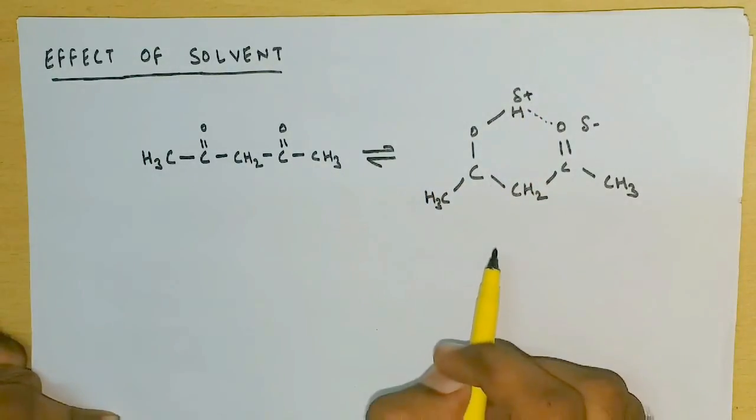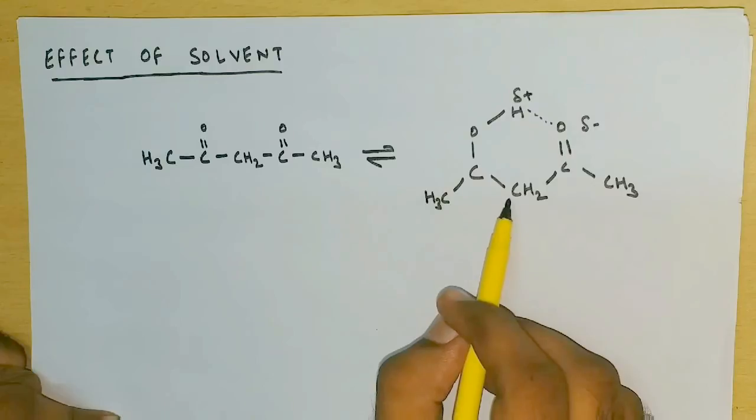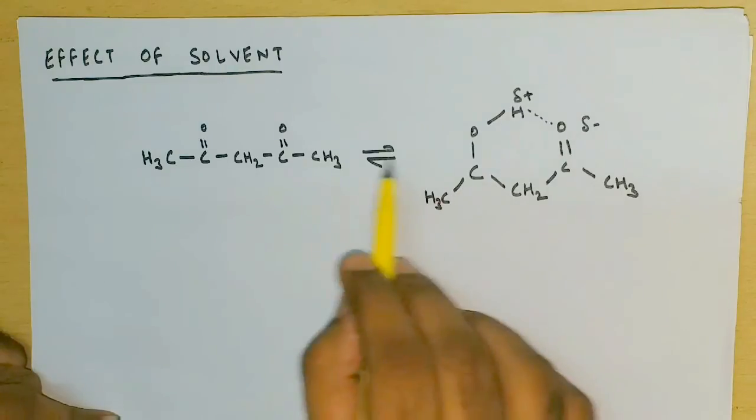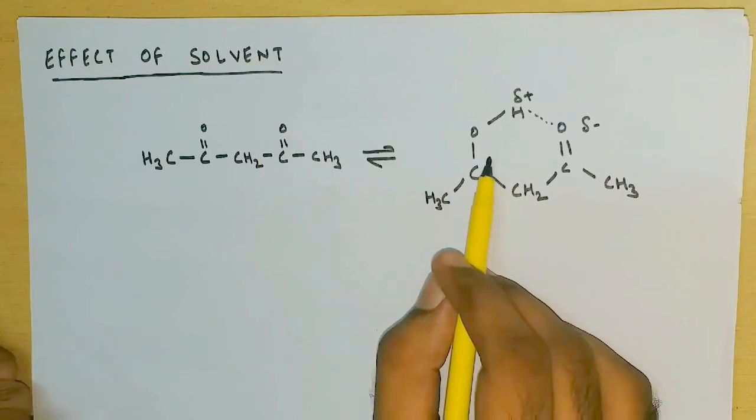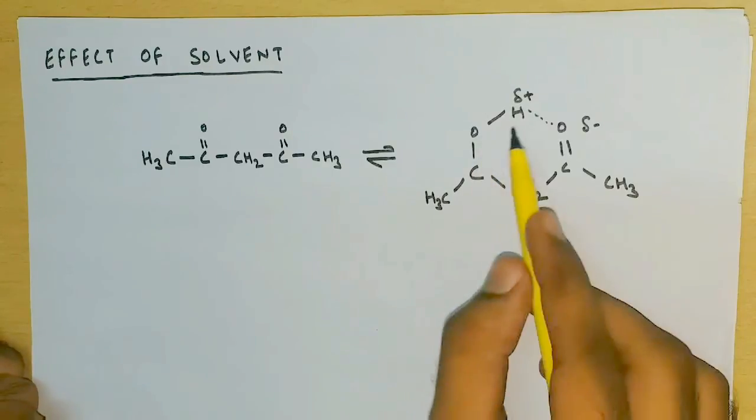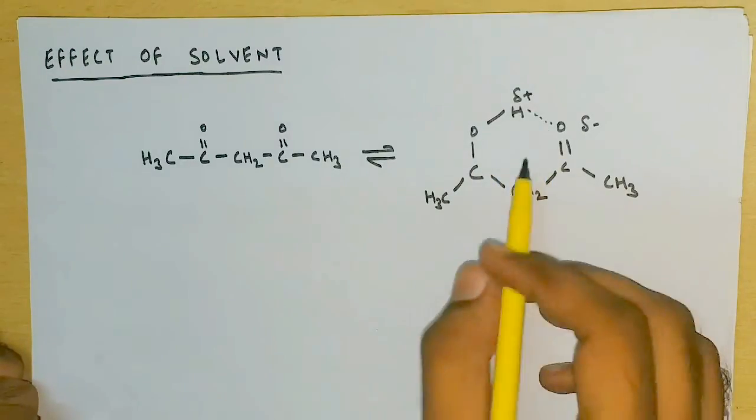We observed that it has intramolecular hydrogen bonding as a stabilizing factor, raising its enol content to 76 percent. If the solvent is non-polar in nature, it will have no impact on its OH hydrogen bond because of its neutrality.